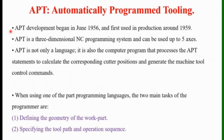Automatically Programmed Tooling: the development of APT began in June 1956 and it was first used in production around 1959. APT is not only an NC Language — it is also a Computer Program that performs calculations to generate Cutter Positions based on APT Statements. So based on Automatically Programmed Tool Statements, Cutter Positions are calculated by this program.